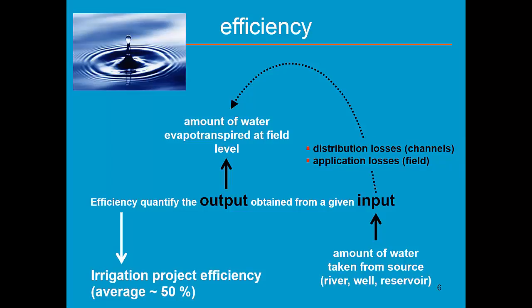This efficiency is called the irrigation project efficiency and the average of the world is only about 50%. So 50% of the amount of water taken from the source is not lost by evapotranspiration at the field.